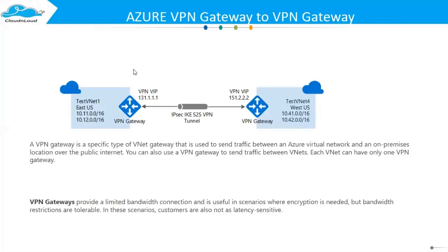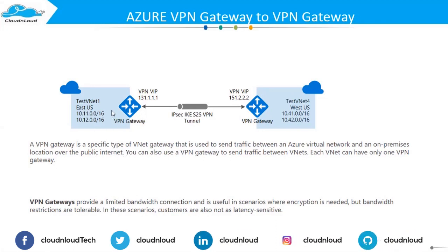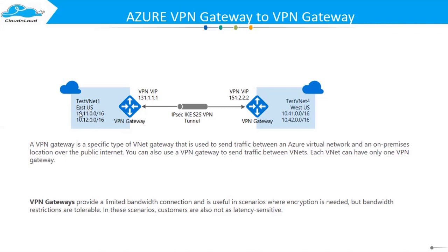We will see VPN gateway to VPN gateway now, using the internet. Say we have one location — East US — and another location — West US. This resource wants to talk to the other location, but not via the private backbone, via the public internet. In that case, VPN gateway to VPN gateway gives you more flexibility. For example, an Azure virtual network to an on-premises location over the public internet.